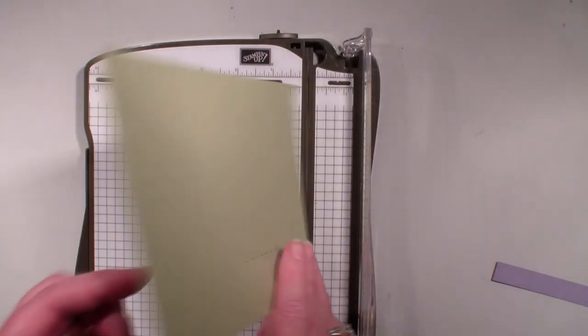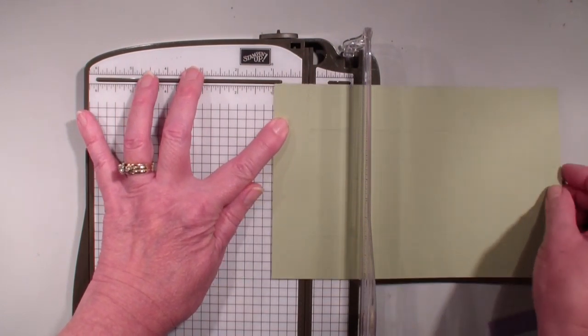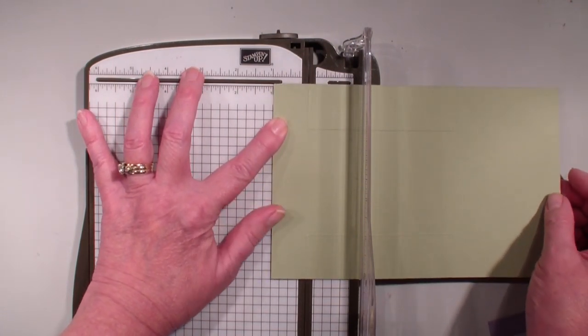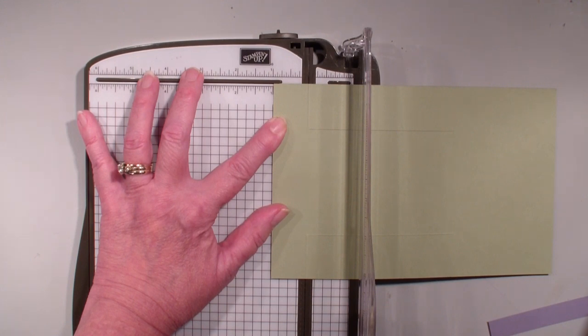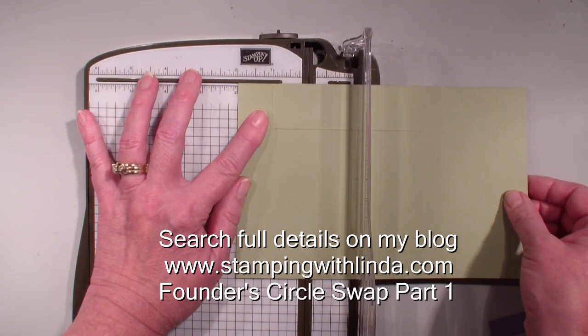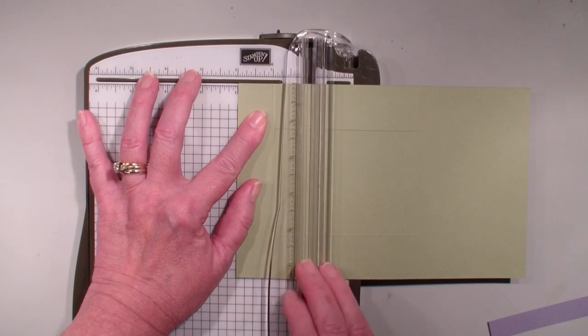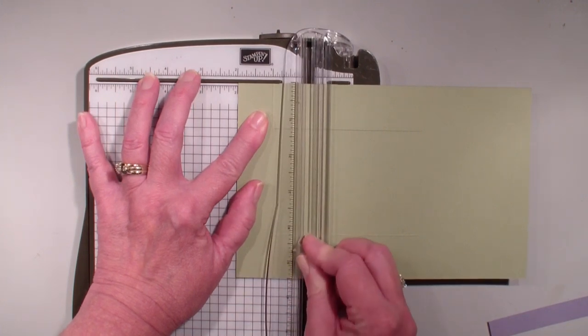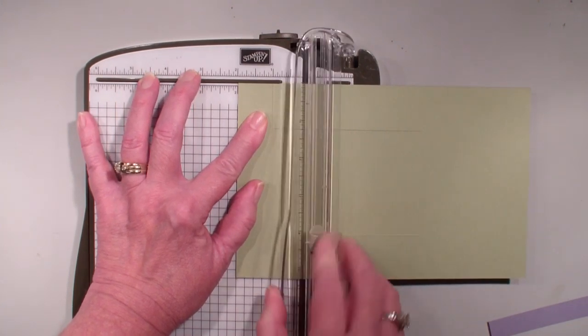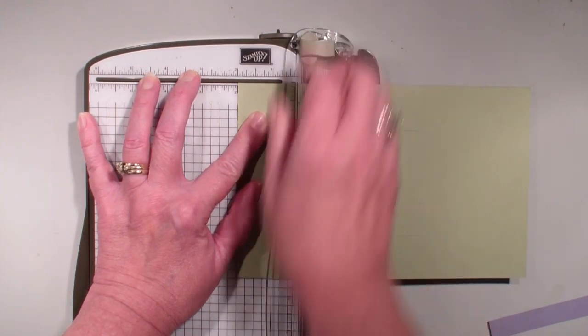Then I'm going to flip my paper over so the 1 inch is here. I could have scored here but I find that it wiggles back and forth and it's harder for me to score. So next I'm going to go in and I'm going to score at 2 inches. Line that up and again, I'm just going to score from the edge of the paper to the cut line, lift up, cut line to the edge of the paper.